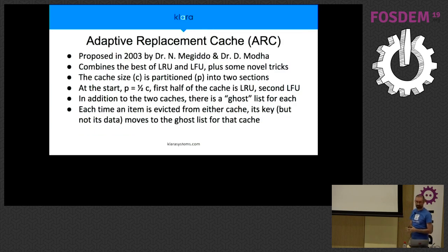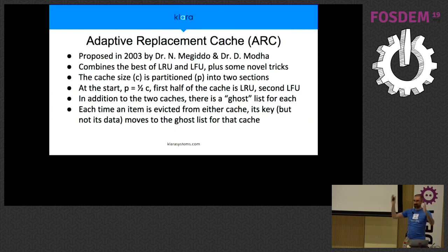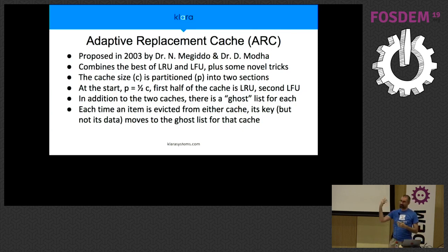In 2003, two researchers presented a paper at the USENIX FAST conference called the Adaptive Replacement Cache. The concept is to combine the best of LRU and LFU together with some novel tweaks to make the most efficient cache possible. You take your cache of size C and partition it — by default, half keeps track of the most recently used files, and the other half is LFU so that frequently accessed files can stay in the cache. In addition to those two, we also keep ghost lists.